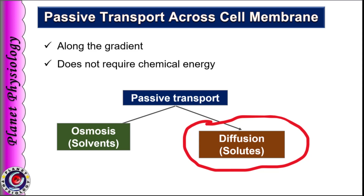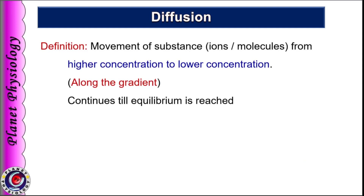Let us start with the definition of diffusion. Diffusion is defined as movement of a substance from its higher concentration to lower concentration, or in other words, diffusion is the movement of substance along the gradient. The process of diffusion continues till equilibrium is reached. Once equilibrium is reached, there is no net movement of the substance. Even though diffusion can take place in any medium, here we shall concentrate mainly on diffusion across the cell membrane.